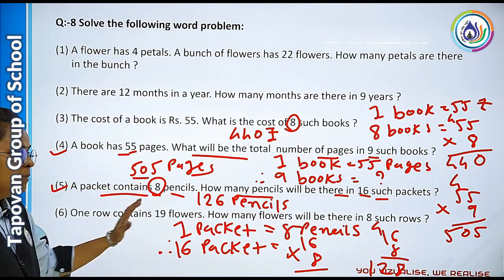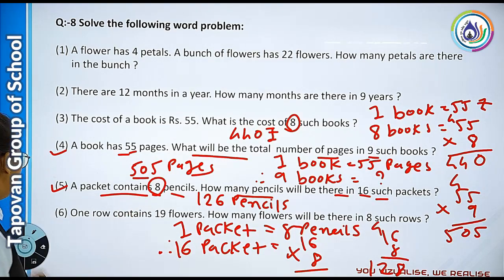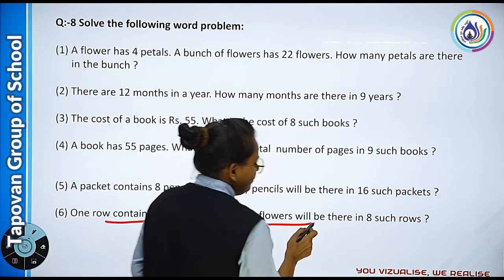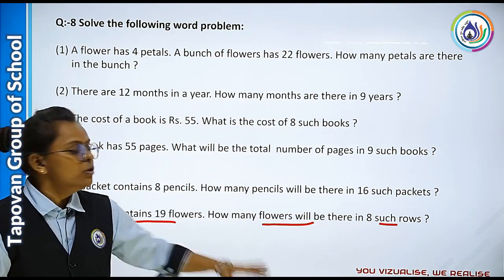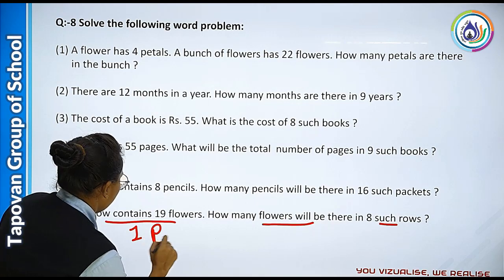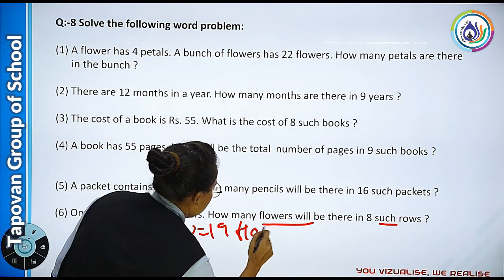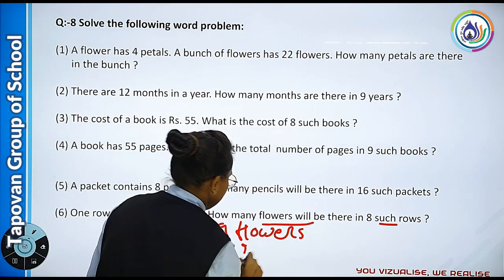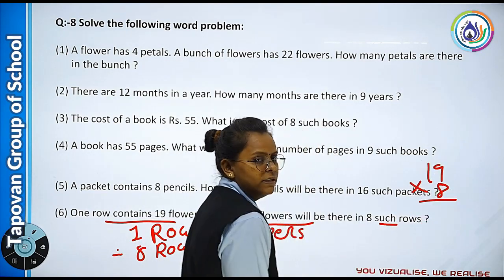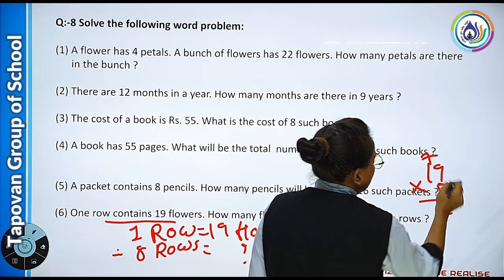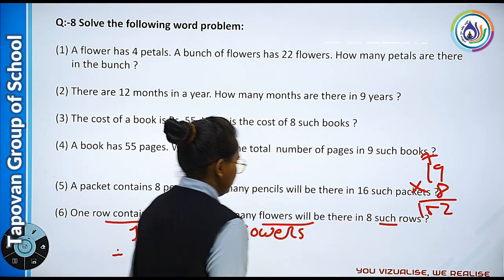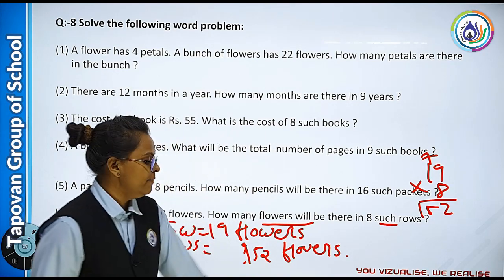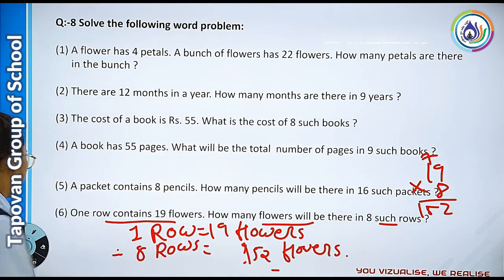Aap iska screenshot leejiye. Ab hum last wala karenge: one row contains nineteen flowers. So how many flowers will be there in eight such rows? Ek row mein 19 flowers hain, toh eight rows mein kitne honge? Nineteen into eight — nine eights are seventy two, eight ones are eight, carry seven — one fifty two. Answer: 152 flowers honge. Aap iska screenshot leejiye.